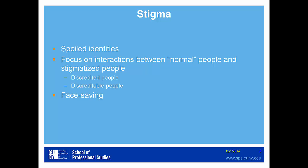Stigma, another really important work from Goffman, deals with the idea of spoiled identities. It focuses on interactions between, in quotes, normal people and people who are stigmatized — that is, they're discredited or discreditable. There is a large amount of face work or face-saving work that allows us to maintain interaction during a discreditation process or with a discredited person. Think of yourself on the subway with a homeless person and the kinds of things that you do to allow the person to maintain whatever dignity they have left.